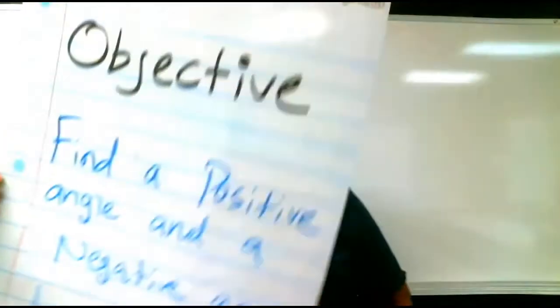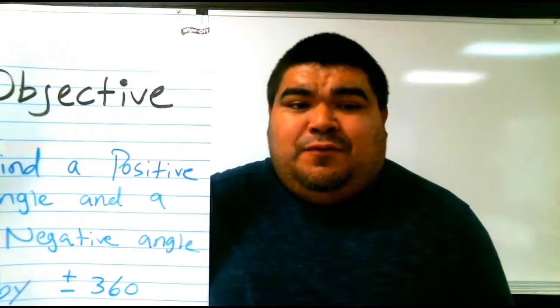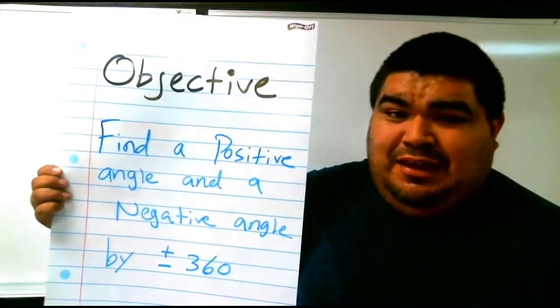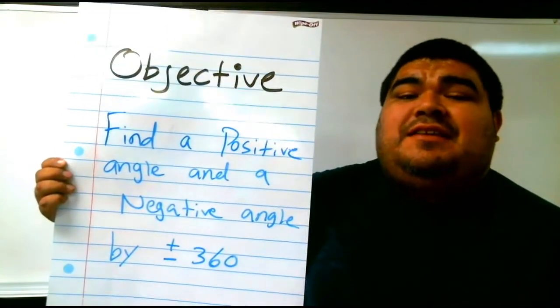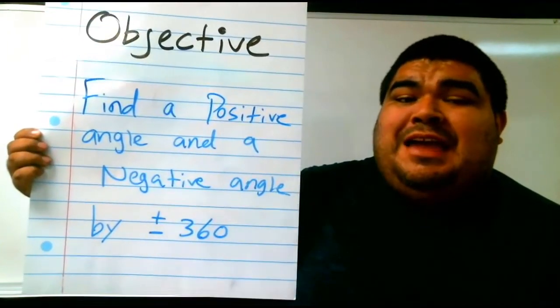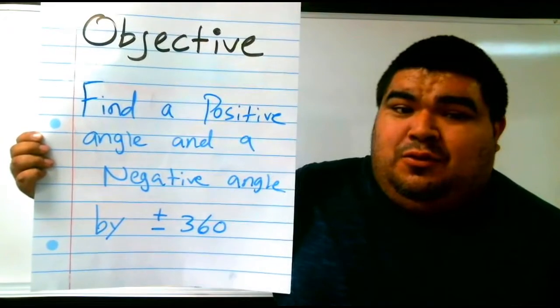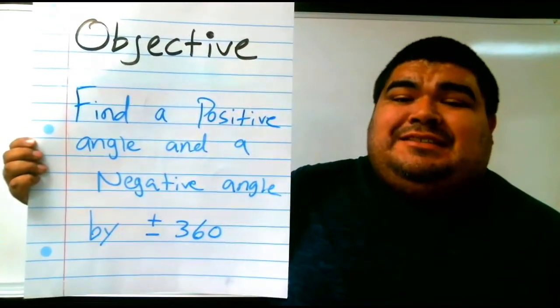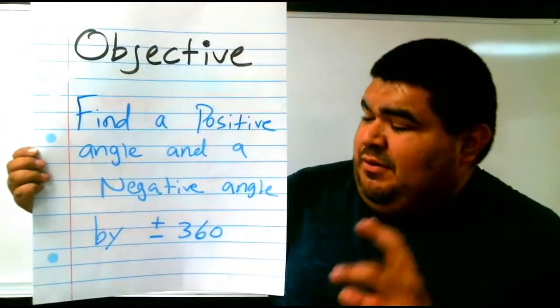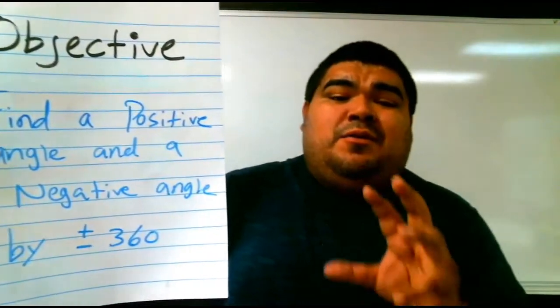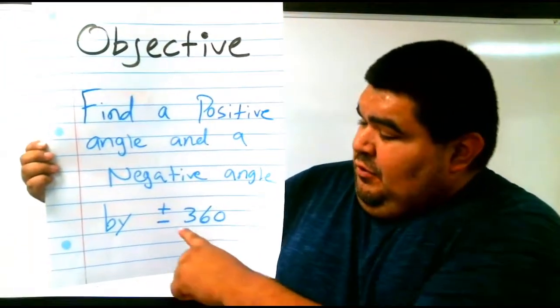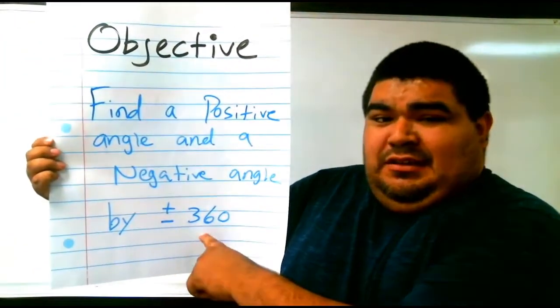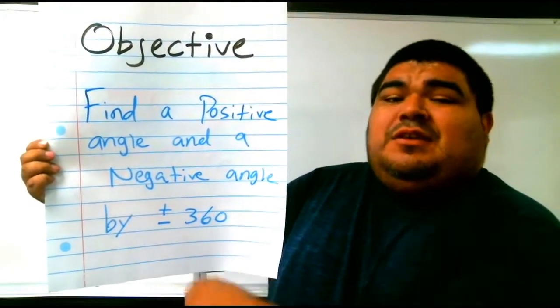So our objective for today is to find a positive angle and a negative angle by adding or subtracting 360. Very simple. The only number you have to deal with is 360 and the angle I give you. If we're looking for a positive, we add 360. If we're looking for a negative angle, then we subtract 360.